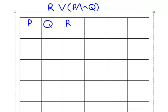So for my first column P: true, true, true, true, false, false, false, and false. Whenever you have a truth table of three variables, the first column you'll set up as four trues, four falses.